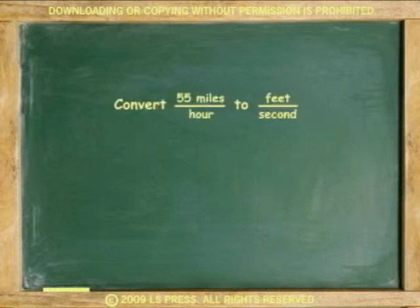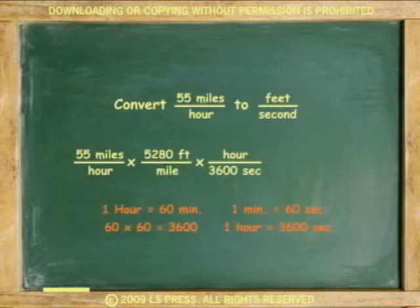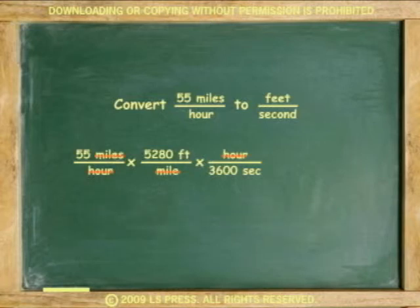Another example. Convert 55 miles per hour to feet per second. 55 miles per 1 hour times 5,280 feet in 1 mile times 1 hour has 3,600 seconds. Cancel miles. 55 times 5,280 divided by 3,600 equals 80.7 feet per second.